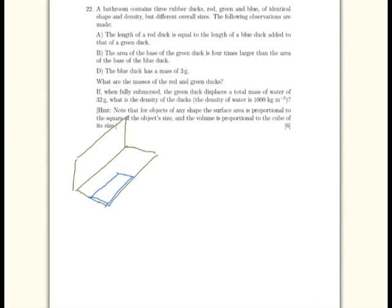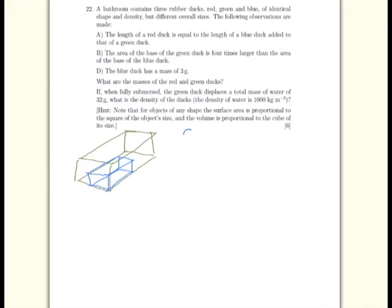And given they all have the same shape, that must mean that the volume of the blue duck can fit into the green duck eight times. So eight times the volume of the blue duck equals one green duck.